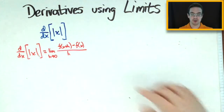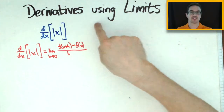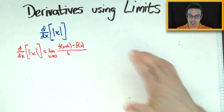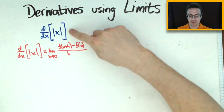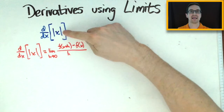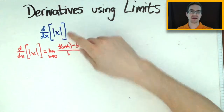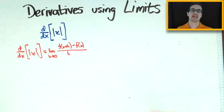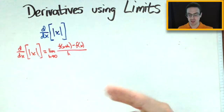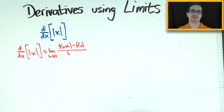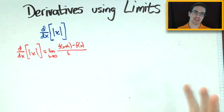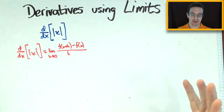This is going to be another video about derivatives using limits. This time our function is going to be the absolute value of x, and an interesting thing happens when we look at the absolute value, so hopefully you'll see that by the end of this video.